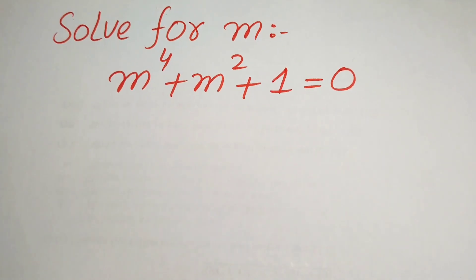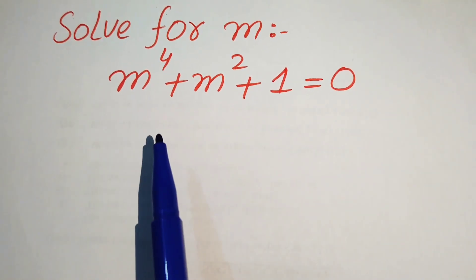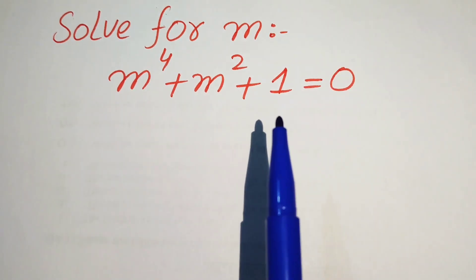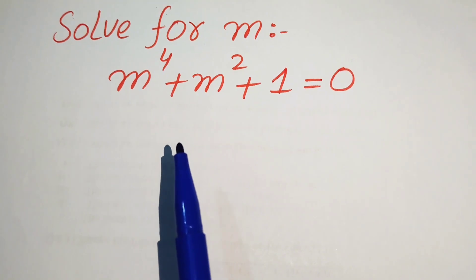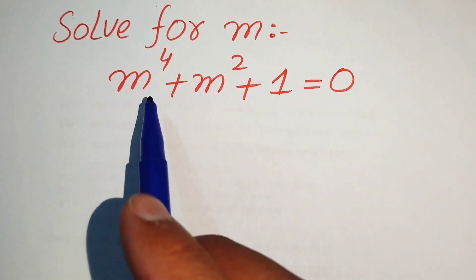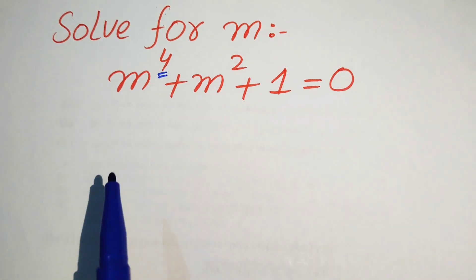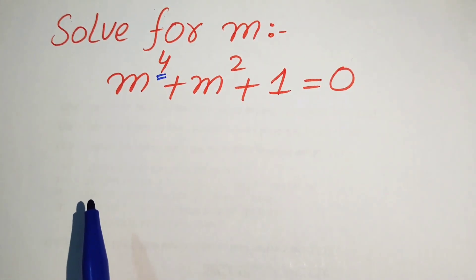Hello everyone, welcome. We solve this nice algebra problem: m to the power of 4 plus m squared plus 1 equals 0, and we solve this for the values of m. The highest power of m is 4, which means this equation has 4 roots or 4 solutions, so we will find all four roots.